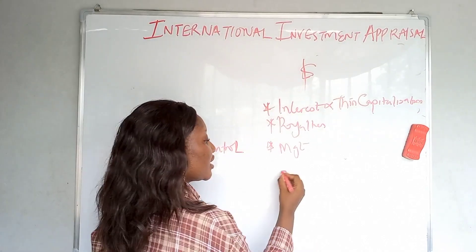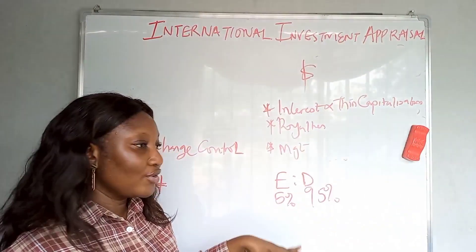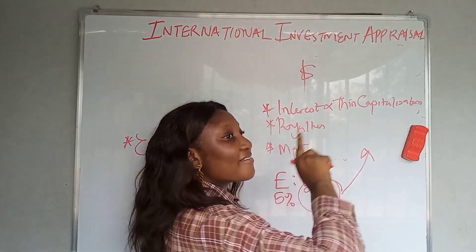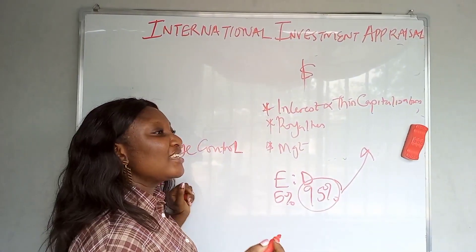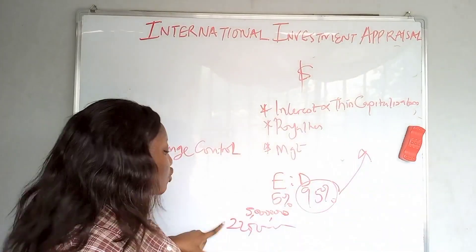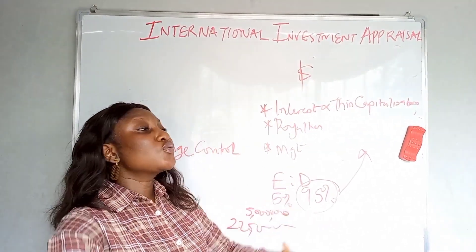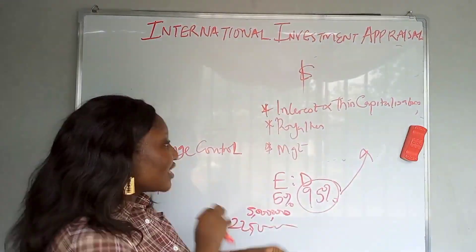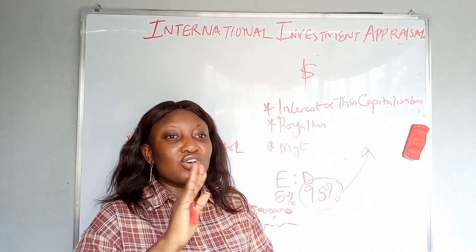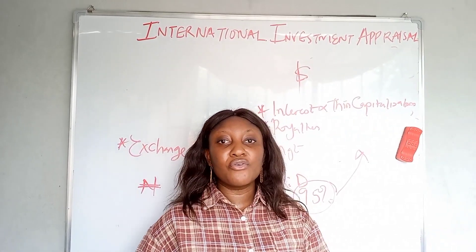One key exchange control mechanism is thin capitalization — having much more debt than equity, for example 95% debt and 5% equity. Because interest on debt is tax-deductible, the high interest payments drastically reduce taxable profit. With equity of only 5 million and debt of 225 million, the interest charges are so large that very little profit remains to be repatriated as dividends. Those are the four issues; let's now move into solving questions.